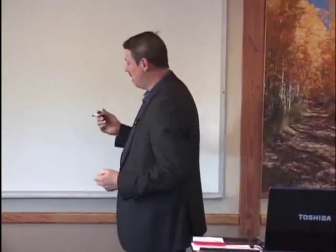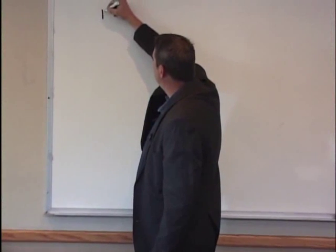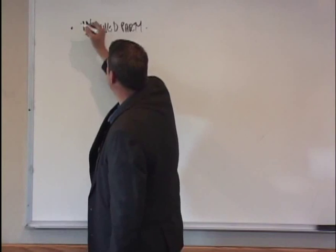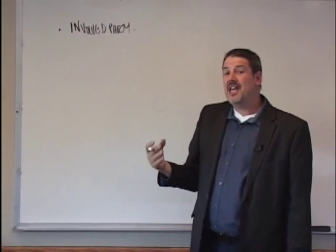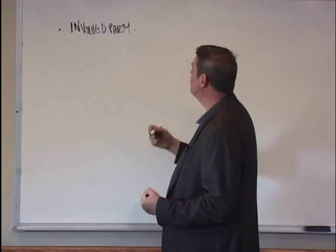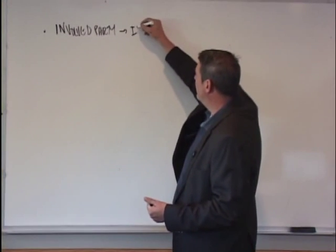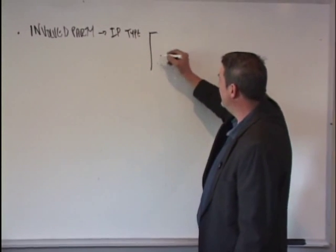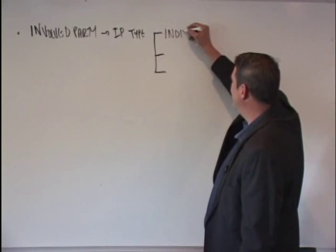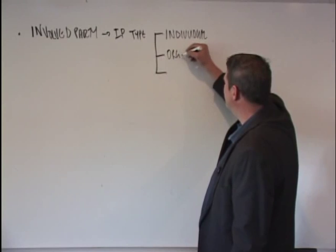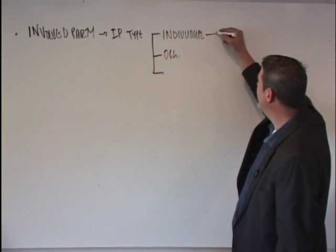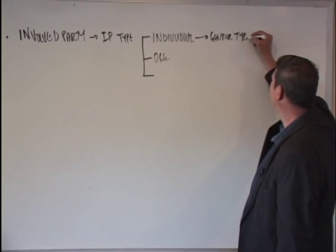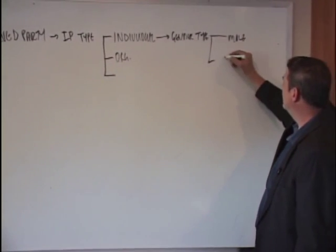Let's consider the concept of involved party. The first thing we can say is this is a concept. The concept hierarchy has certain values, so we can type this involved party concept. We can create a classifier — we call it involved party type, abbreviated IP type. This itself can have several values: involved party type can be an individual or an organization. We can classify individuals even further, say by gender, so we can call it gender type. And we can classify gender as being male or female.